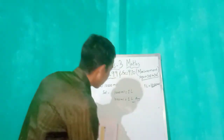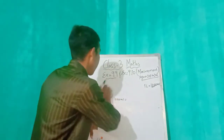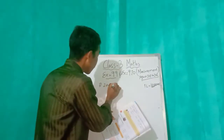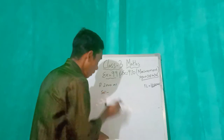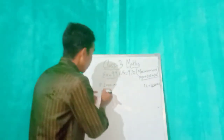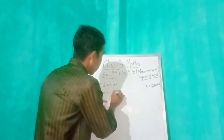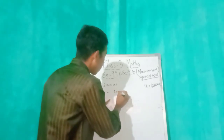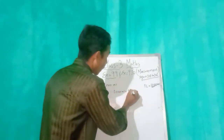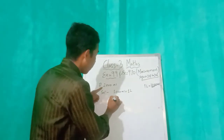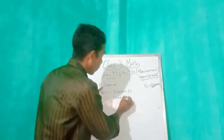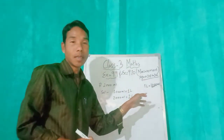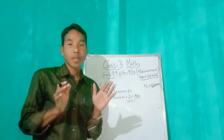Number three: we have 2000 mL. One thousand mL equals one liter, so two thousand mL equals 2 liters. This is our answer — 2 liters. Have you got it? Hope you have understood.